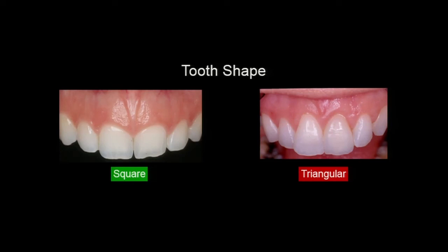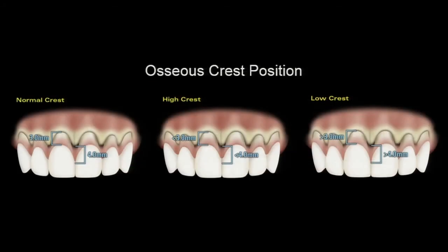Square teeth are easier than more triangular teeth — all things that we should look at. And then osseous crest position, which we've talked about a lot. Normal crest is what we expect to find; we can also find high crest. But low crest is the danger — greater than three millimeters on the facial, greater than four millimeters approximately. That is high risk.